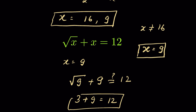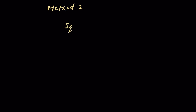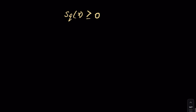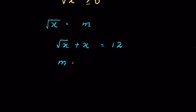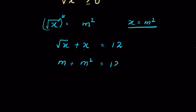Why is there only one solution? Let's try method 2 to understand. We know the square root of a number x is always greater than or equal to 0 — it cannot be negative. Let's substitute: let square root of x equal m. Then since squaring removes the square root, x equals m².